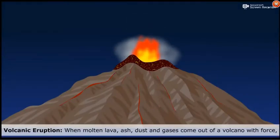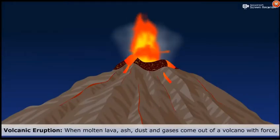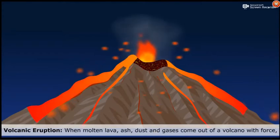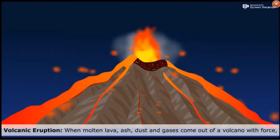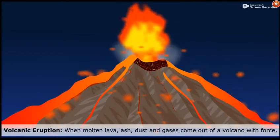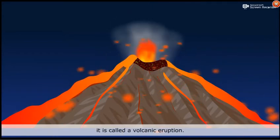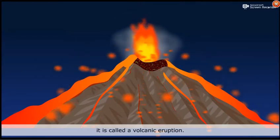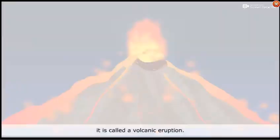Volcanic eruption. When molten lava, ash, dust and gases come out of a volcano with force, it is called a volcanic eruption.